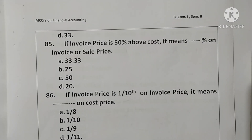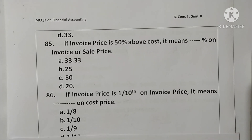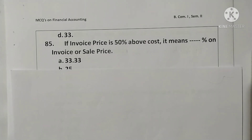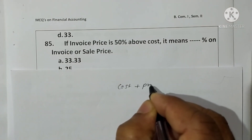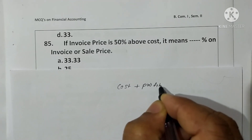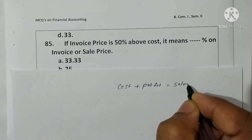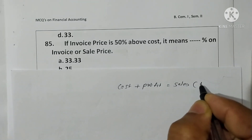We are going to discuss the multiple choice questions on finance accounting, B.Com part one, semester second, third part. Before that, we are going to discuss the profit percentage on cost price or invoice price. We know that cost plus profit equals sale price, also called invoice price.